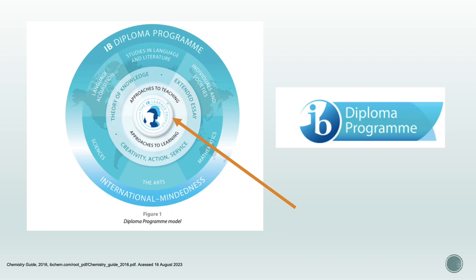Finally, as shown in the diagram, the student is at the heart of the program model, which indicates that the diploma program aims to develop students in the knowledge, skills, and attributes that they will need to fulfill the aims of the IB, as expressed in the organization's mission statement and their learner profile.